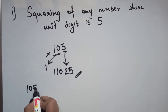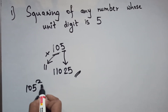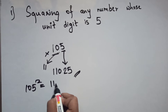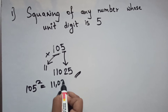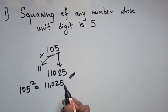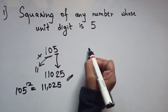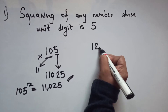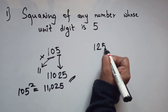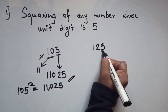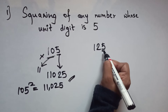So the square of 105 is 11025. Easy, isn't it? Now let's take 125. Again, the square of the unit digit 5 is 25.